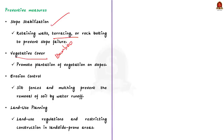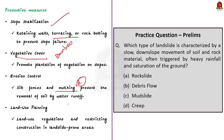Third is erosion control — implementing measures like silt fencing and mulching can prevent the removal of soil by water runoff. Finally, land use planning — enforcing land use regulations and restricting construction in landslide-prone areas can prevent damage caused by landslides. These are important points to remember about landslides; this topic can be asked in disaster management questions.